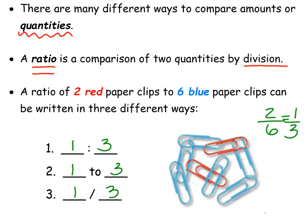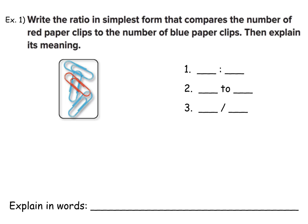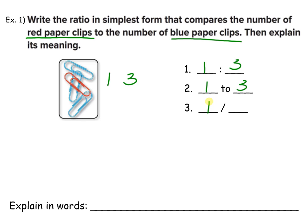We're going to practice tons of examples with that. So we're going to use paperclips again, but we have a slightly different picture. Write the ratio in the simplest form that compares the number of red paperclips to the number of blue paperclips. Look at the picture — how many red paperclips do you have? You have one. How many blue paperclips do you have? You have three. Is that in the most simplified form? Yes. So write that ratio three ways: one colon three, one to three, or one slash three.